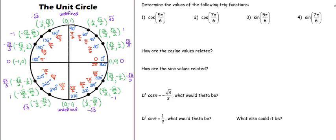Welcome to today's video on inverse trig functions. You'll notice that I have my unit circle out, so if you don't have yours out, go ahead and get it out. We are going to start by reviewing some things we've learned about the unit circle. We want to find some values based on this unit circle. I want the cosine of 5π/6, so the first thing I want to do is go to my unit circle and find where 5π/6 is — that's going to be right here at 150 degrees. Because I'm looking for cosine, remember cosine is the x-coordinate of that point.